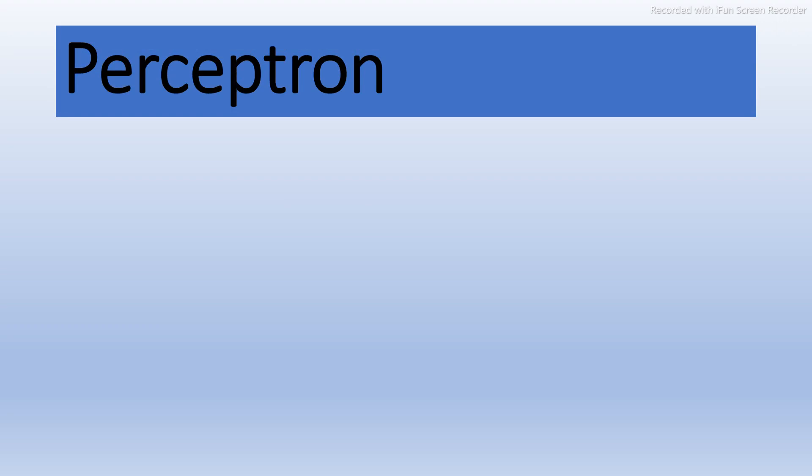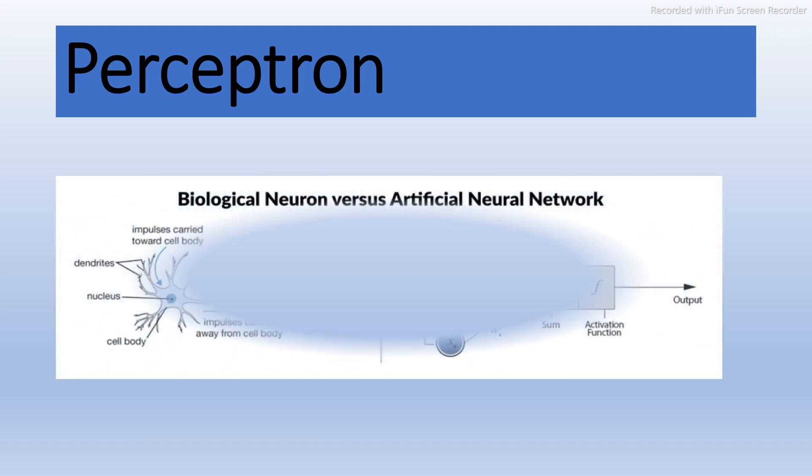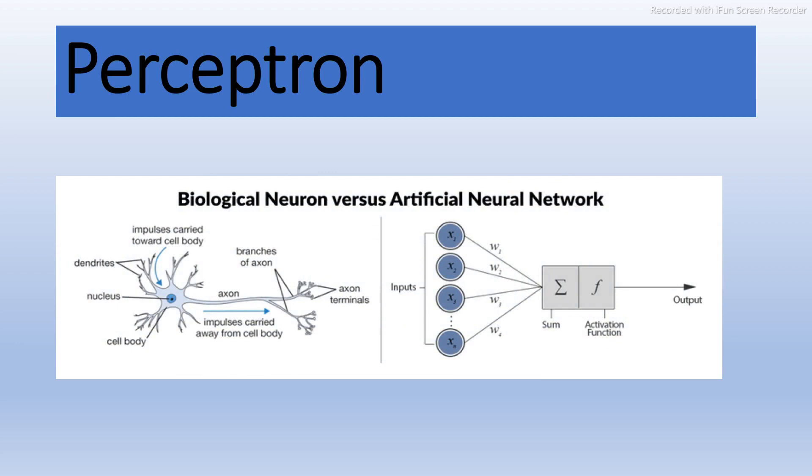The next topic is the perceptron, which is very important. A perceptron is a single neural network — like a single biological neuron in our brain with dendrites and an axon. It is a simple structure which has input nodes and a single output node connected to each input node. Here is a visual comparison between the biological neuron and the artificial neural network.